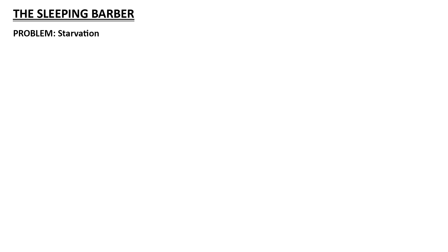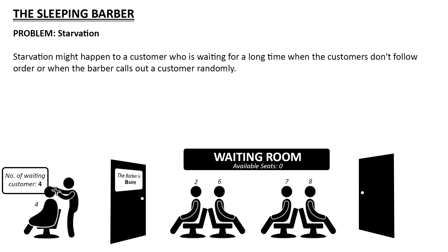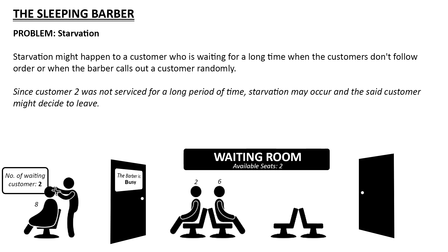Now let's move on to the second problem, which is starvation. Starvation might happen to a customer who is waiting for a long time when customers don't follow order, or when the barber calls out a customer randomly. As can be seen on the illustration, the order in which the customers are being served is not followed numerically, thus leaving customer 2 unserved. Since customer 2 was not serviced for a long period of time, starvation may occur and the customer might decide to leave.